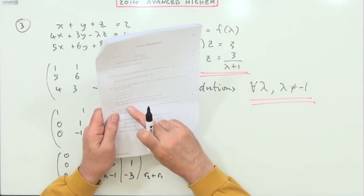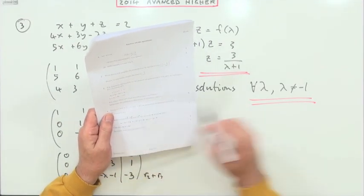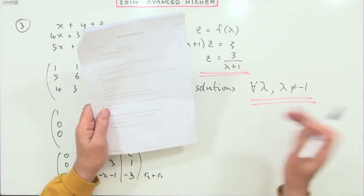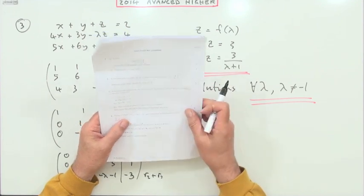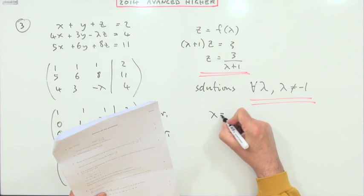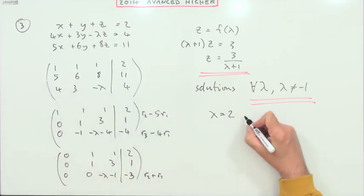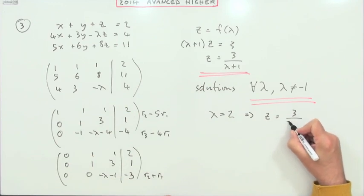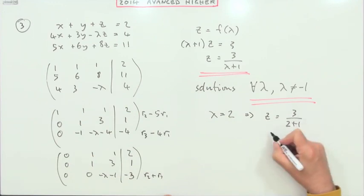And then the last part: determine the solution when lambda is two. I didn't say to begin with what numbers we're considering. For this last part, if lambda equals two, that means that z will be three over two plus one, which means z equals one.